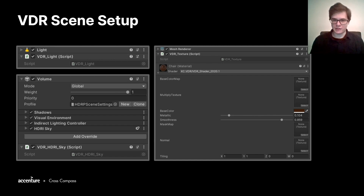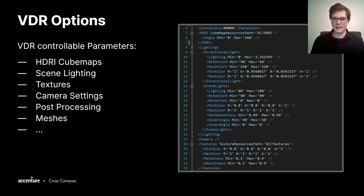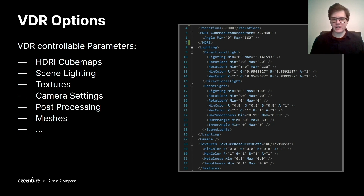If we change the HDR Sky, it results in real-time global illumination changes. If you don't want to control a specific object in the scene, it doesn't need to have the corresponding component on it. And if you want to temporarily disable the VDR effects on any of those objects, you can just disable the component. Currently, we are using an XML file in order to keep track of our options and to adjust the bounds of our random distribution for every dimension. As of now, we have the option to control the HDR Sky, scene lights, and textures. But we have plans to extend our plugin for camera settings, post-processing effects, meshes, and many more. Internally, we created a modular system to extend our plugin with these modules without much effort.